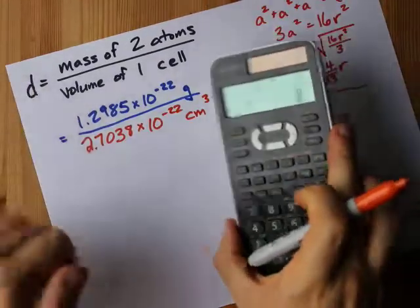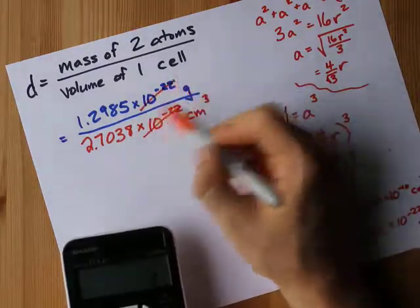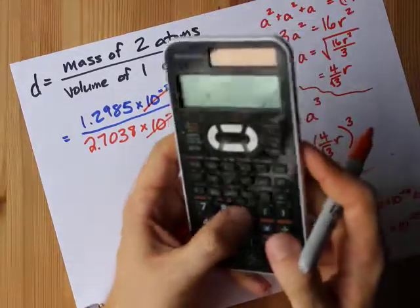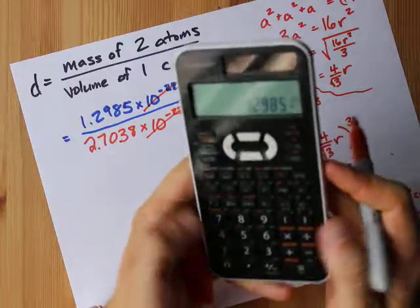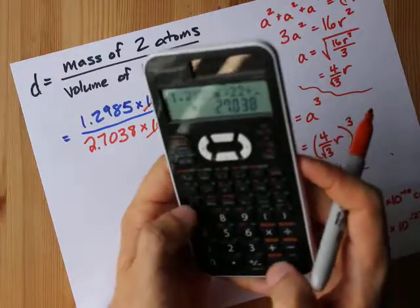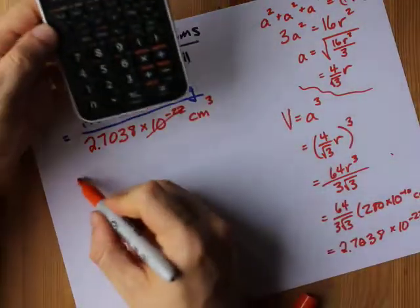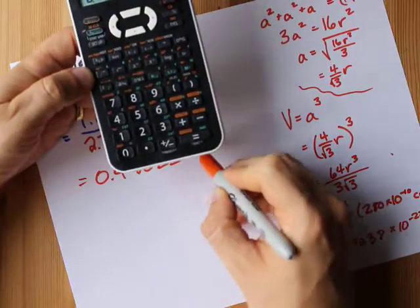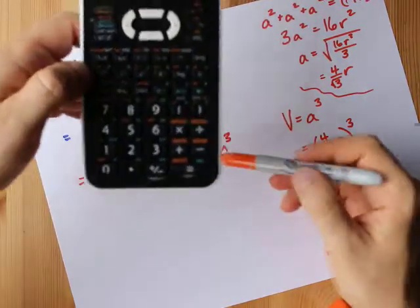So I'm going to take that number and plug it into the density formula. And when I divide these two numbers by each other, the times 10 to the negative 22's cancel. 1.2985 times 10 to the power of negative 22 divided by 2.7038 times 10 to the power of negative 22. I get 0.48025 grams per centimeter cubed.